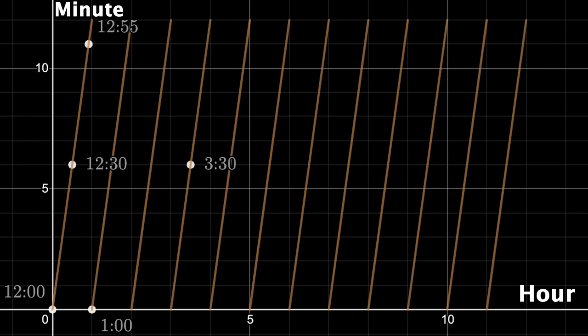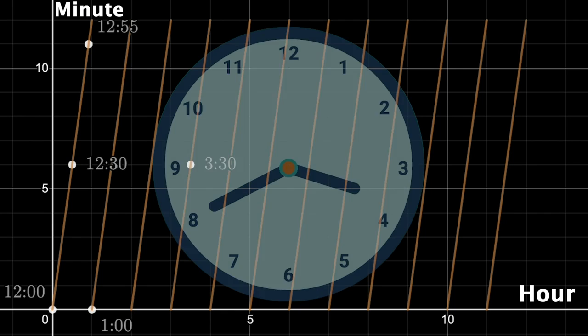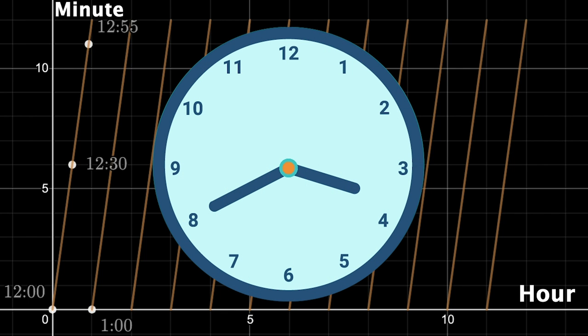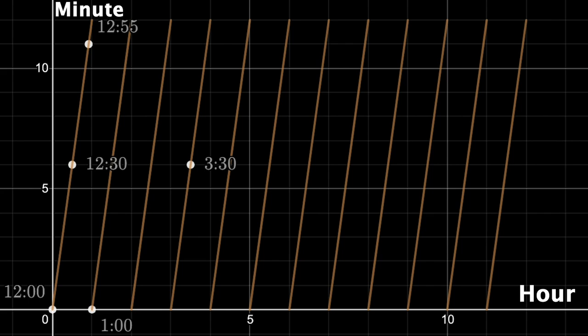So here is every possible time and clock configuration in a 12 hour period. Now remember how 3:40 did not yield a valid configuration when the hands were switched? Well that's because here's 3:40 at 3 and 2 thirds comma 8. And after switching the hour and minute hand, or the x and y coordinates, we get a point that is not on one of those line segments, which are the only valid times. So this now isn't valid.